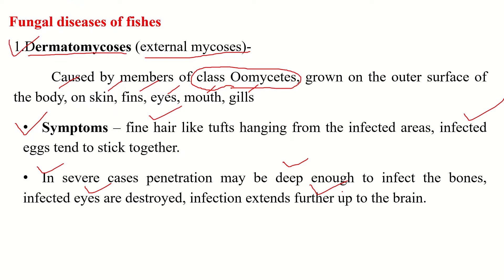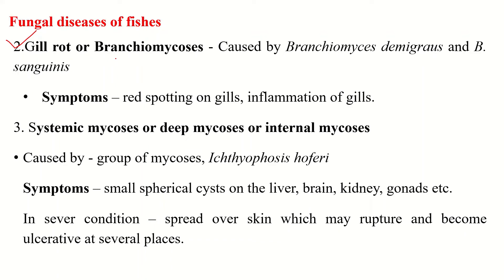The second type of fungal disease is gill rot, or bronchiomycosis, caused by Branchiomyces demigrans or Branchiomyces sanguinis. This disease is first noticed by red spotting on the gills. Later the gills become grayish-white and stop functioning, and the fishes suffocate and die. The fungal hyphae grow into the respiratory epithelium of the gills, causing inflammation and damaging blood vessels, reducing blood supply to the infected area.